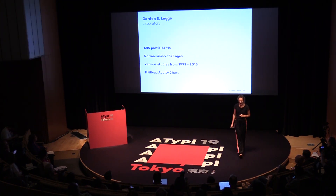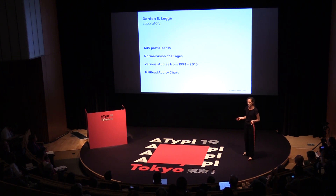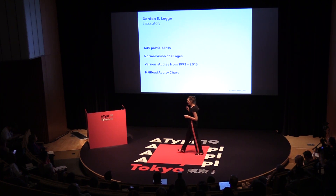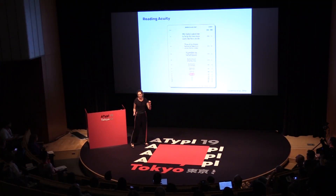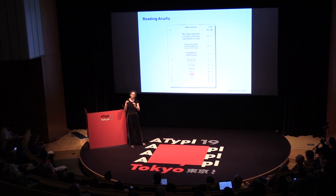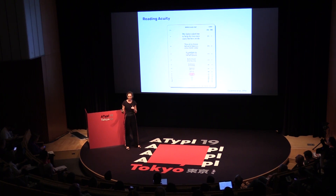This first study is based on a bunch of different experiments carried out at the lab of Gordon Lager. What they did here was that they took more than 600 people that they had tested — all normal vision, of all ages — and they all read the reading chart called MNREAD. This is a bunch of paragraphs that become smaller and smaller, and by doing that, there are a bunch of different measures that you can look at, one of them called reading acuity.